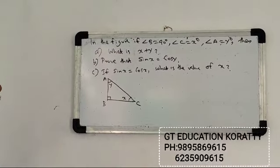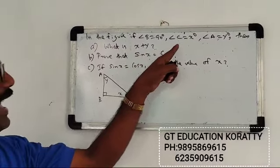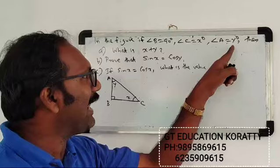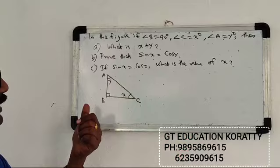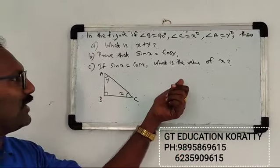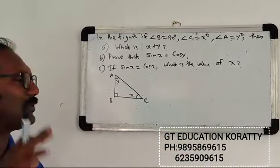In the figure, if angle B equals 90 degrees, angle C equals x degrees, angle A equals y degrees, then what is x plus y? Prove that sin x equals cos y. If sin x equals cos x, what is the value of x? This is a trigonometry question.